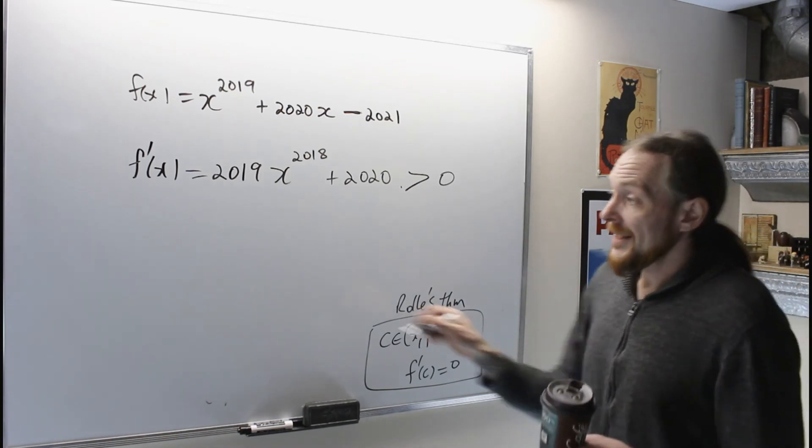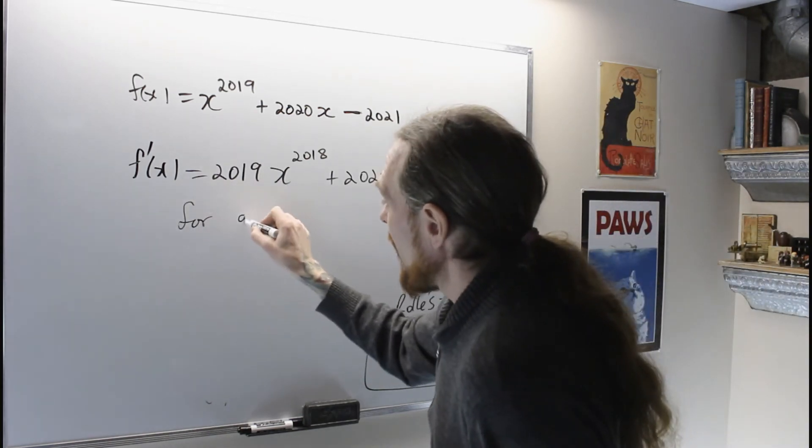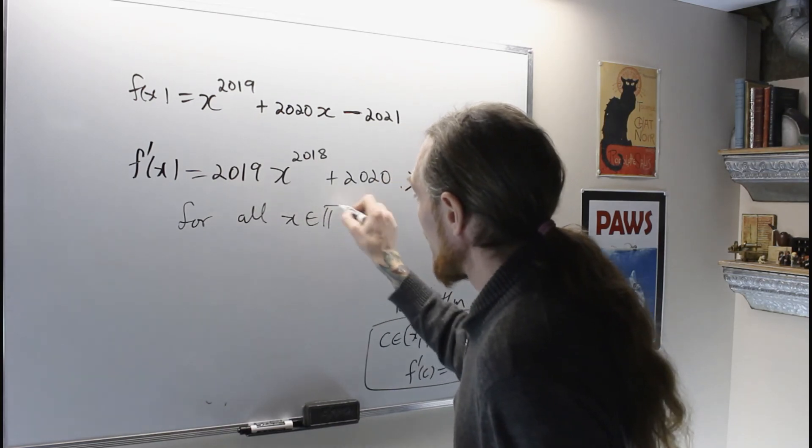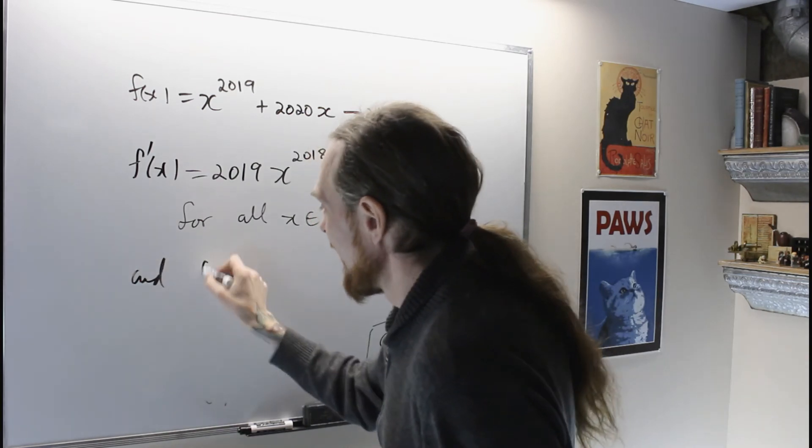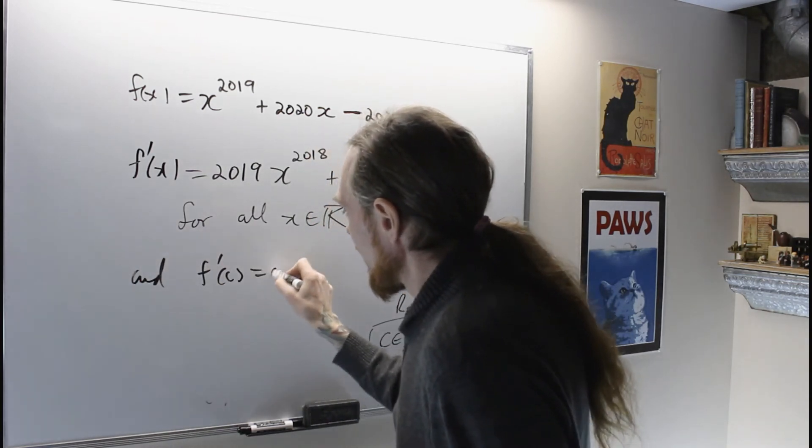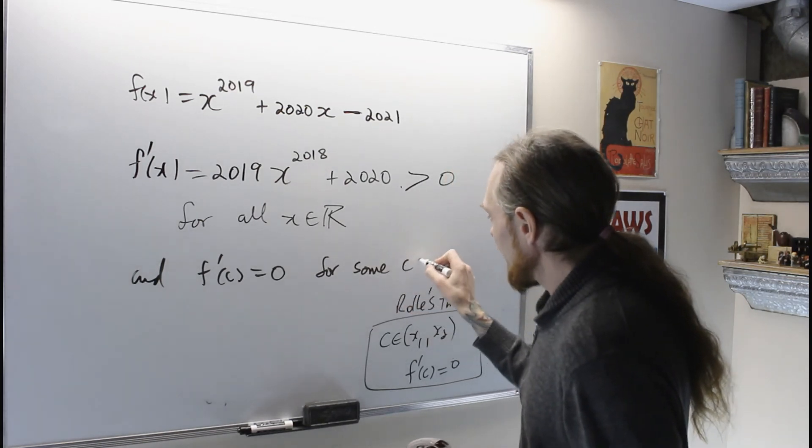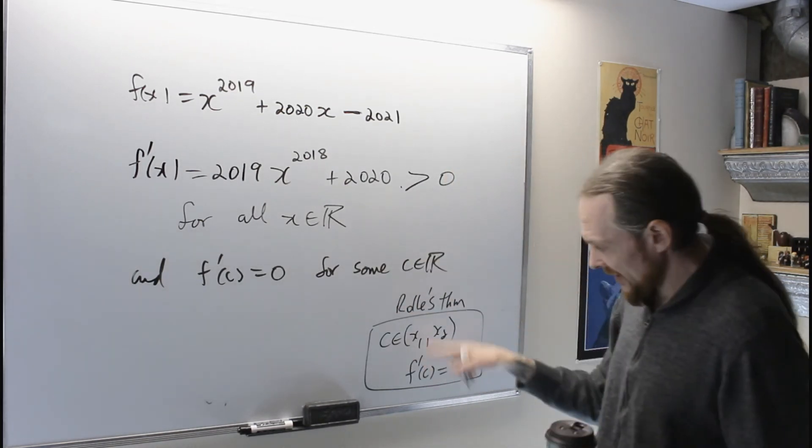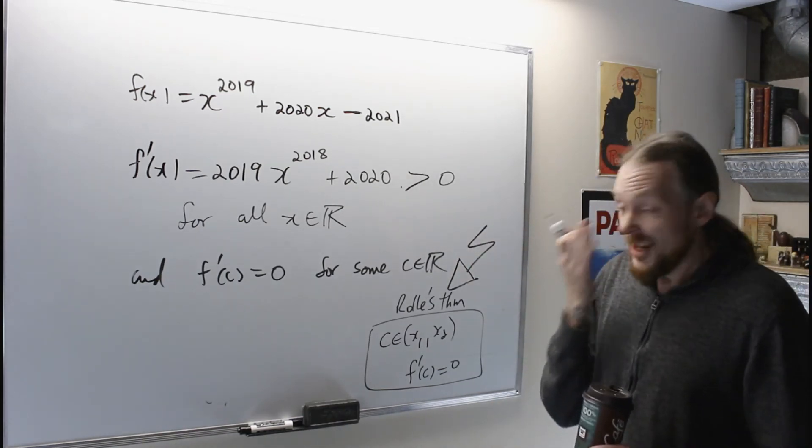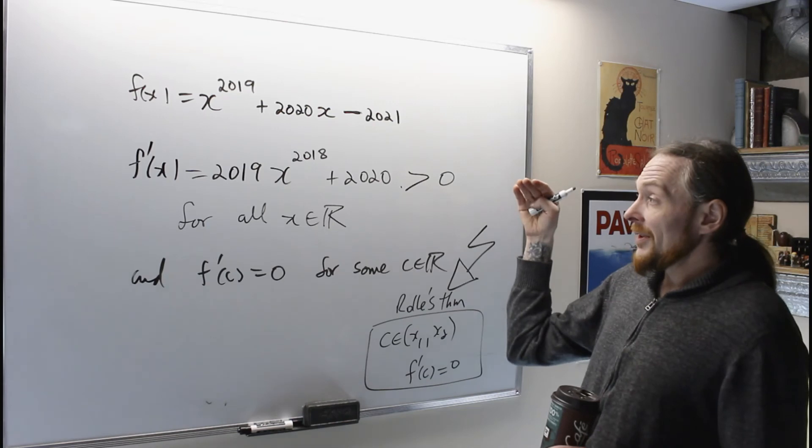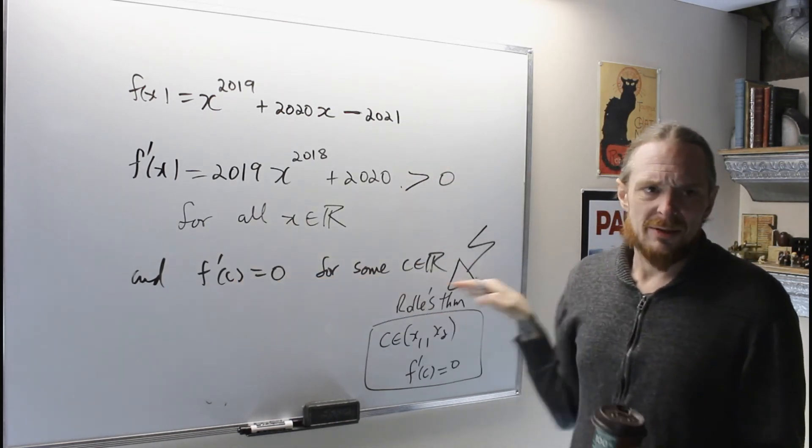So our derivative, we've said is for all x in R. So for every real number, my derivative is strictly positive and our derivative is zero for some c in R, which is specifically in this. And that's what the contradiction is. These two statements contradict each other. You cannot have that the derivative is both strictly positive for every real number and the derivative is equal to zero for some real number.